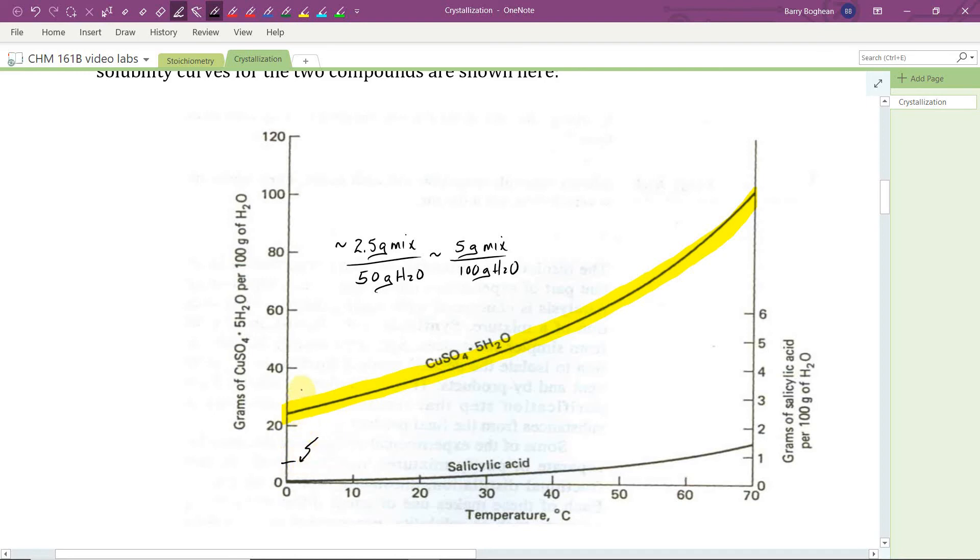Whereas we see that the solubility limit for copper(II) sulfate pentahydrate is approximately 25 grams of CSP per 100 grams of water. So even if all of our mixture was copper sulfate pentahydrate, we'd still be well below the solubility limit of 25 grams. We just won't lose any in the crystallization step.